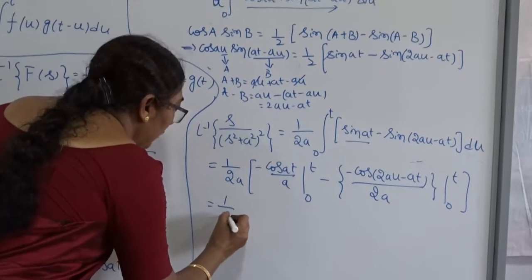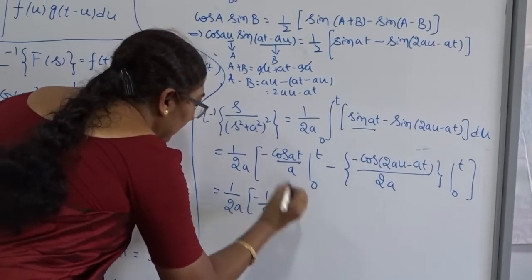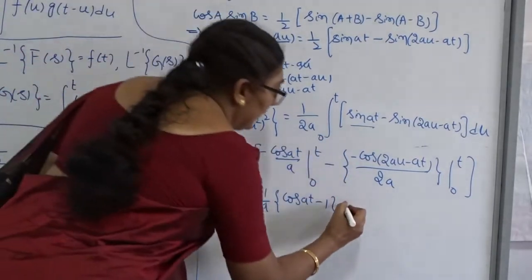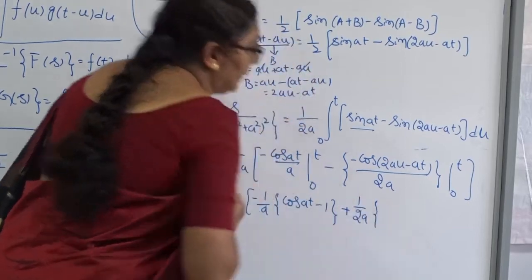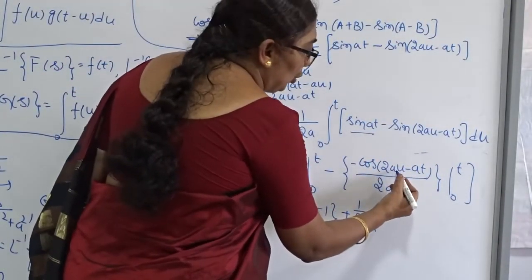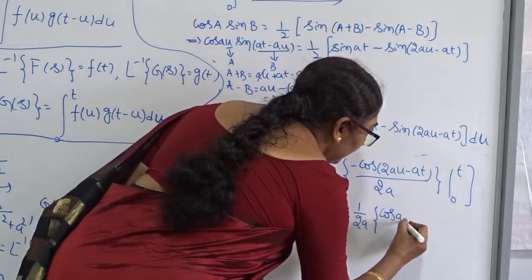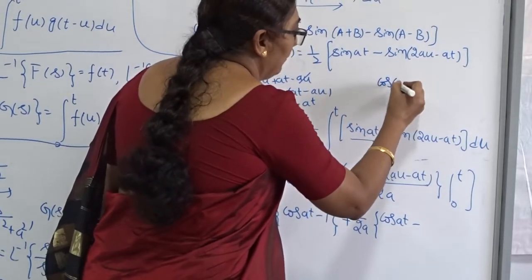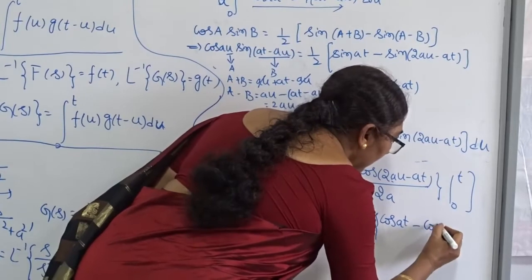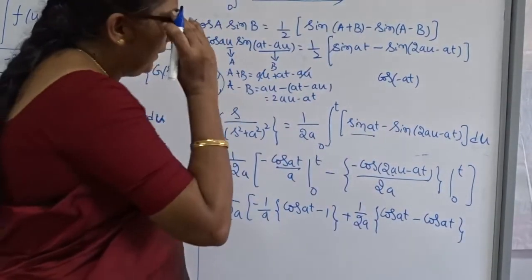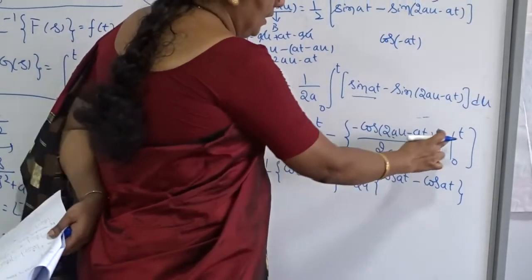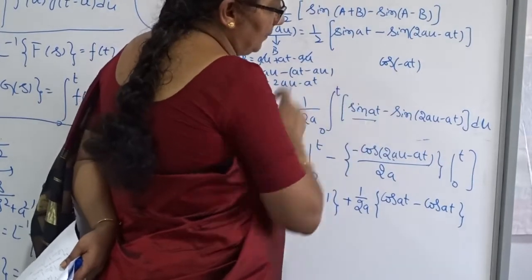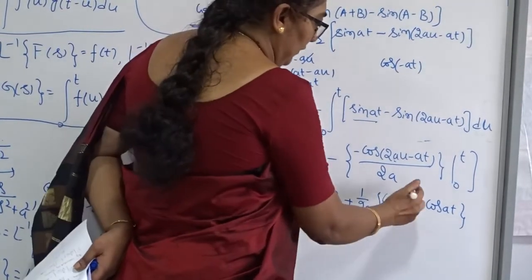So we get (1/2a) times [−cos(at)/a from 0 to t] minus the integral of sin(2au − at), which gives −cos(2au − at)/(2a) from 0 to t. Evaluating: putting u = t gives cos(2at − at) = cos(at). Putting u = 0 gives cos(−at) = cos(at). Therefore these two terms cancel each other out.